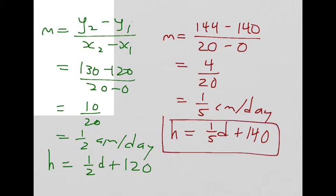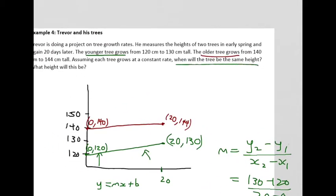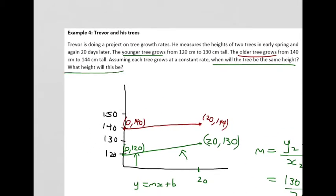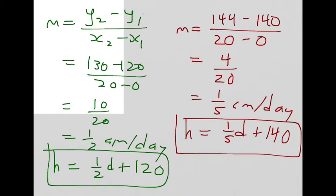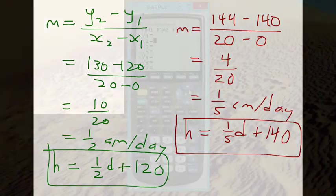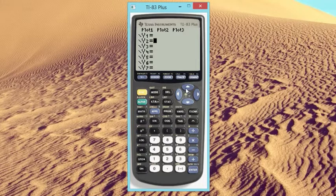There's our linear system. Now we want to graph it and figure out when the trees will be the same height and how high that will be. What day will they be the same height and what height will that be? Let's graph that to find out.